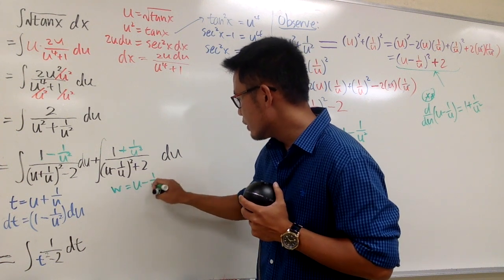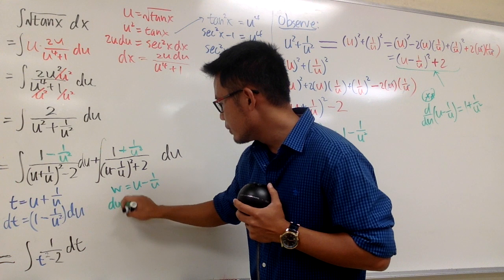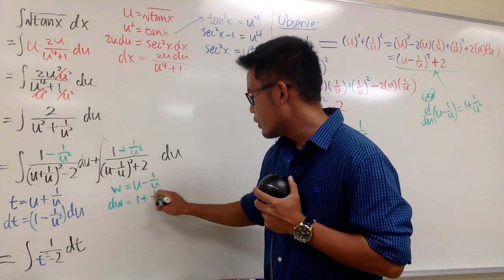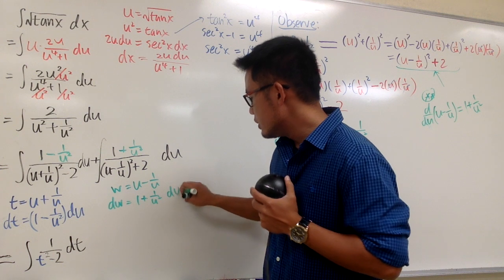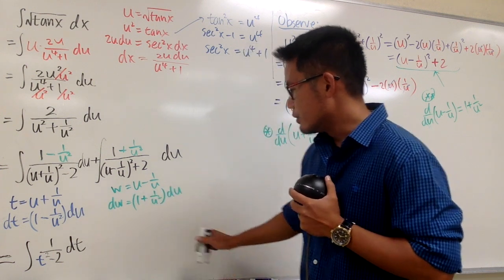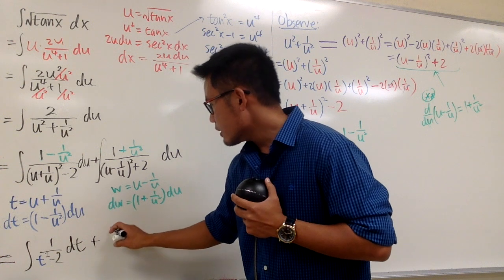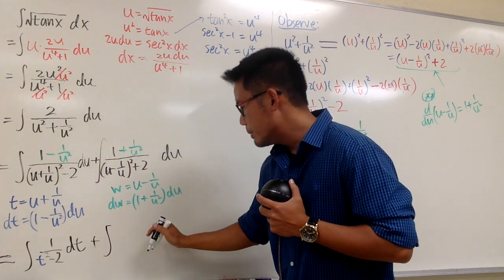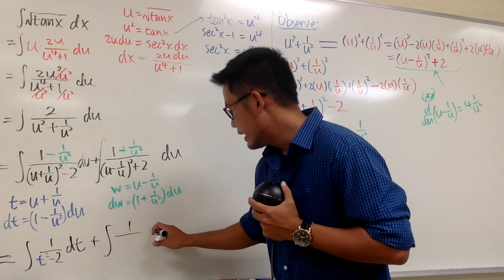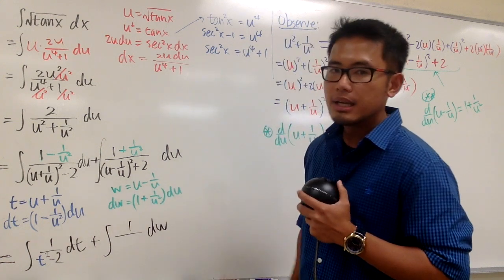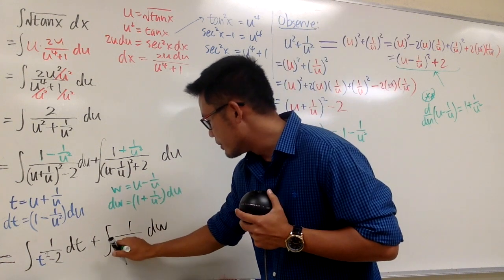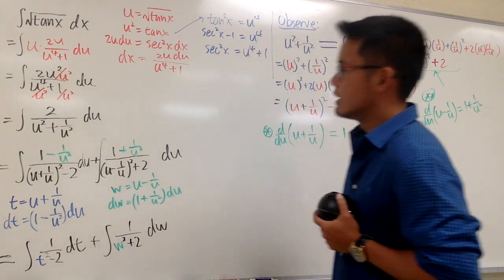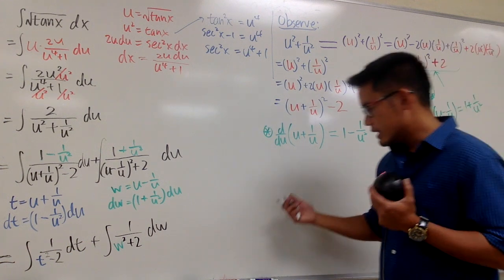For the second integral, let w = u − 1/u. Then dw = (1 + 1/u²) du. So the second integral becomes the integral of dw / (w² + 2).